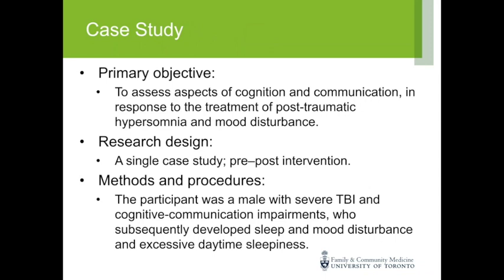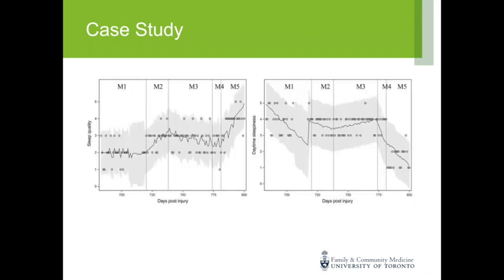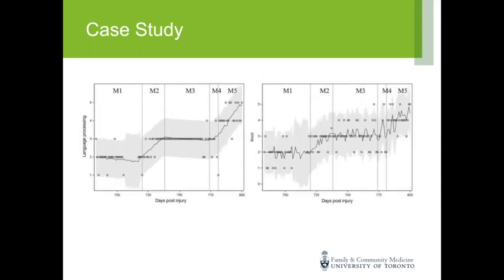We also used interrupted time series for a case study with only a single participant, where we had pre and post intervention measures. The outcome was related to sleep quality and mood disturbance. We fitted segmented regressions to demonstrate changes that happened at different intervals, where each interval was related to a period when an intervention was implemented.